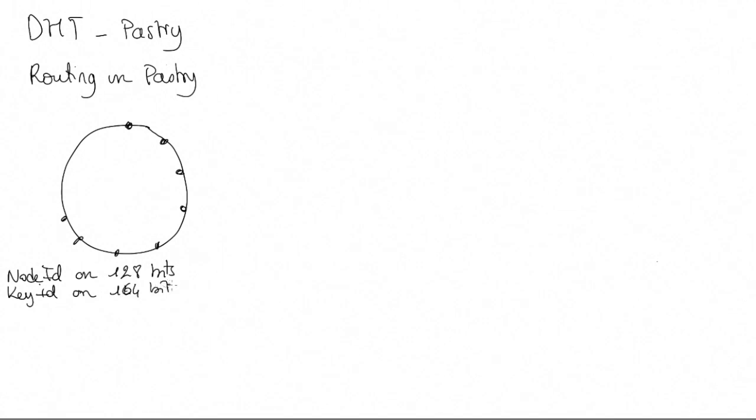Let's start by a reminder of the data structure needed to achieve routing in a peer-to-peer DHT. In Pastry, nodes are assigned unique IDs that place them in a logical ring. Node IDs are 128-bit long and key IDs are usually 164-bit long.